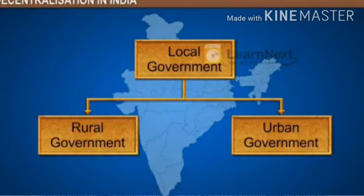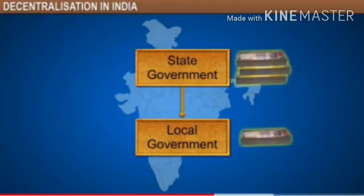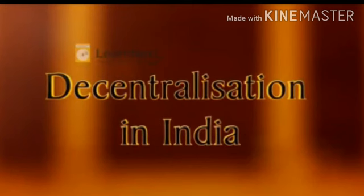However, elections were not held regularly whenever required. Local government did not have any power or resources; it was the state government which distributed money to different municipalities and village panchayats to run the lower units smoothly. The major step towards decentralization was taken in 1992, when the constitution was amended to make the three tiers of democracy more powerful and effective.